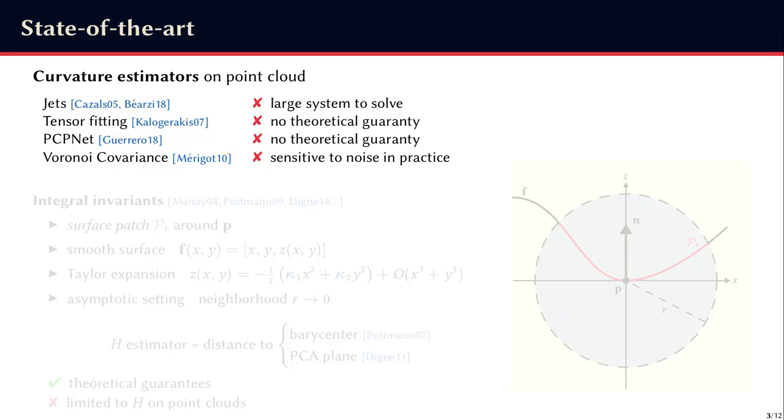Before explaining our method, I'll start with a quick state-of-the-art. There exist many methods to estimate curvatures on point clouds, like osculating and wave jets, the deep learning neural network PCPnet, and methods using a Voronoi diagram, to name a few. However, they have limitations, such as efficiency or robustness issues, or the lack of guarantee.